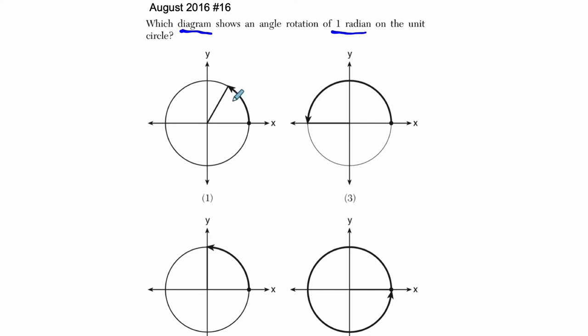So let's think about what a radian is. A radian, the idea of a radian, is that you have a radius to a circle. In this case, it's a unit circle, so we know that this radius right here is one.